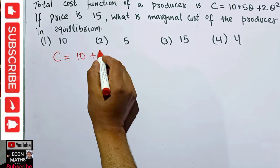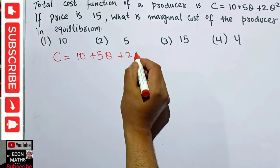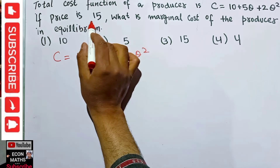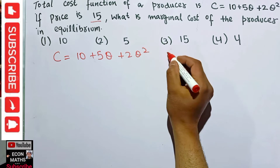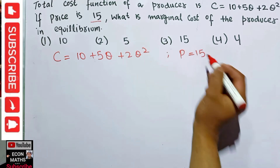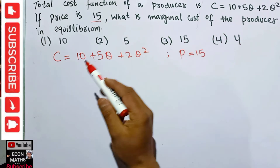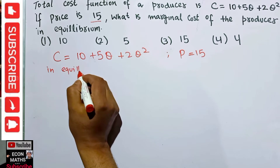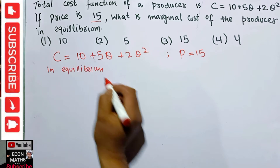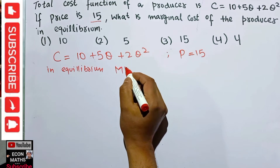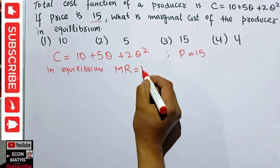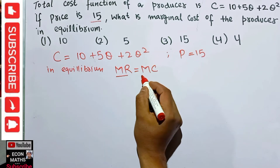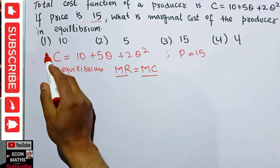Our cost function is given as C = 10 + 5q + 2q², and our price is given as P = 15. We know that when a producer is in equilibrium, marginal revenue should be equal to marginal cost. So we need to find both marginal revenue and marginal cost.